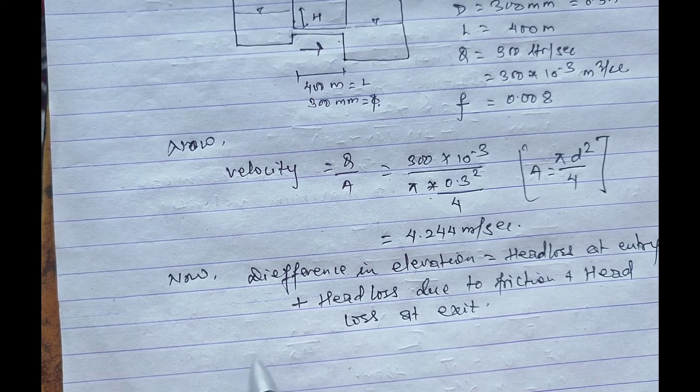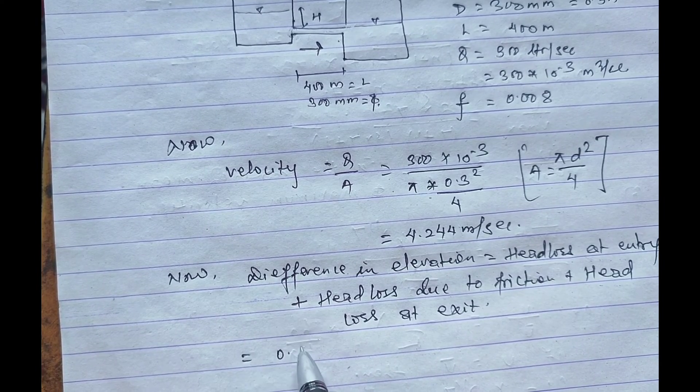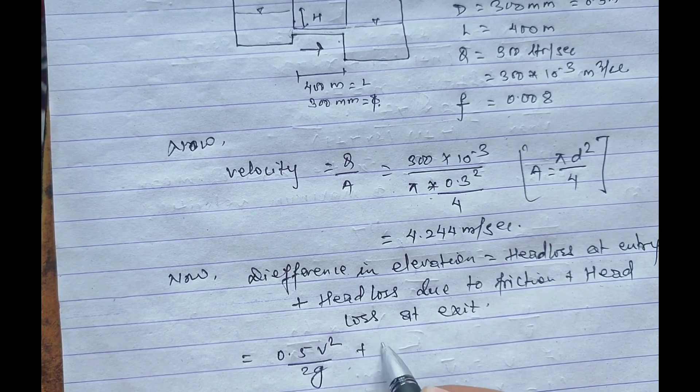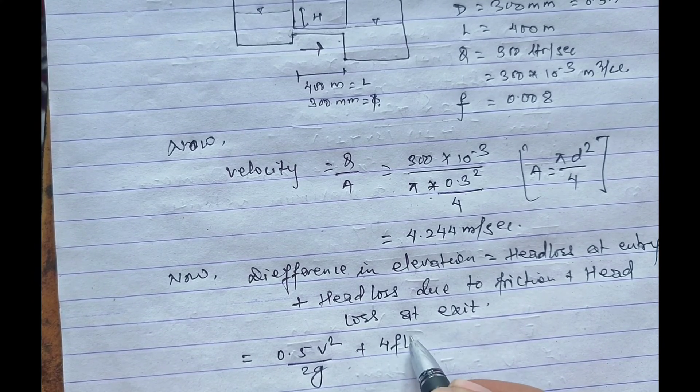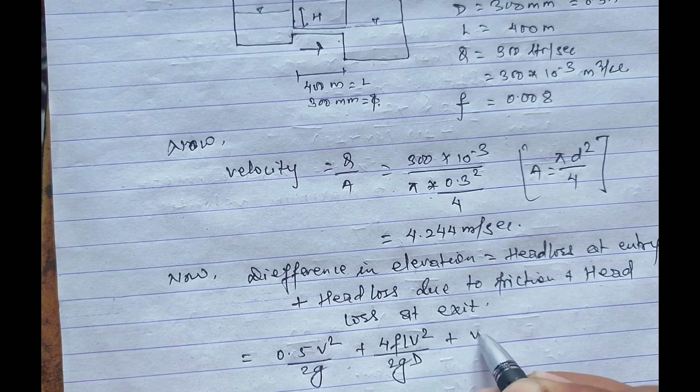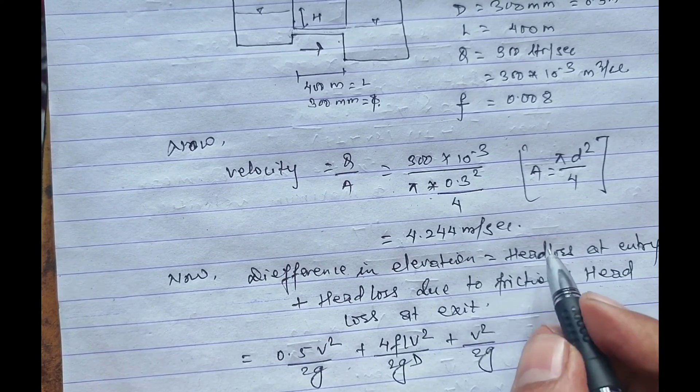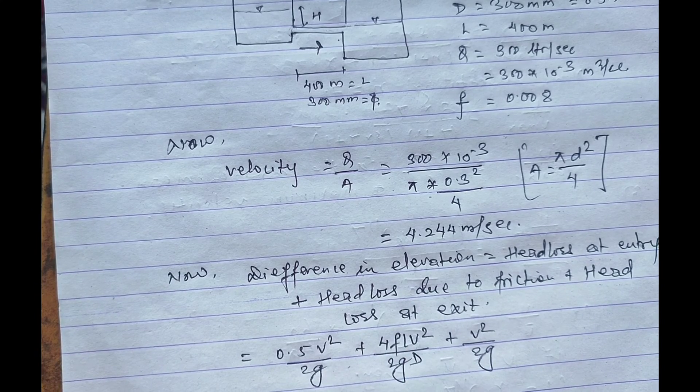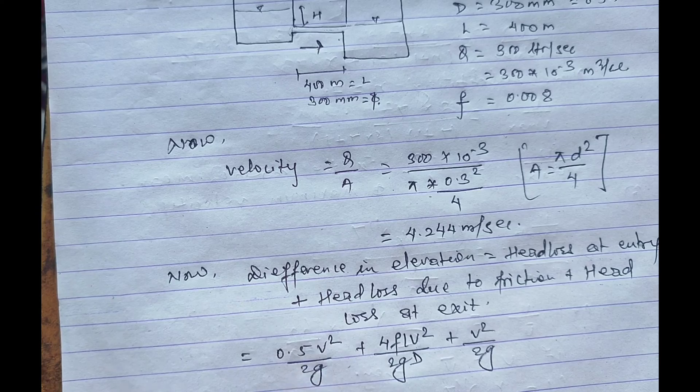The formula is given as 0.5 v square by 2g plus 4 f L v square by 2g d plus v square by 2g. At the entry, 0.5 v square by 2g head loss will occur.